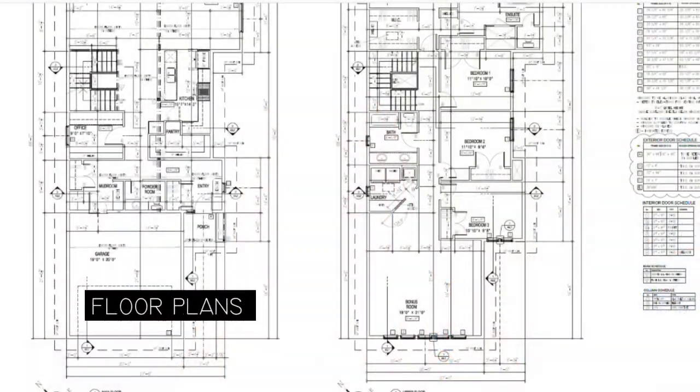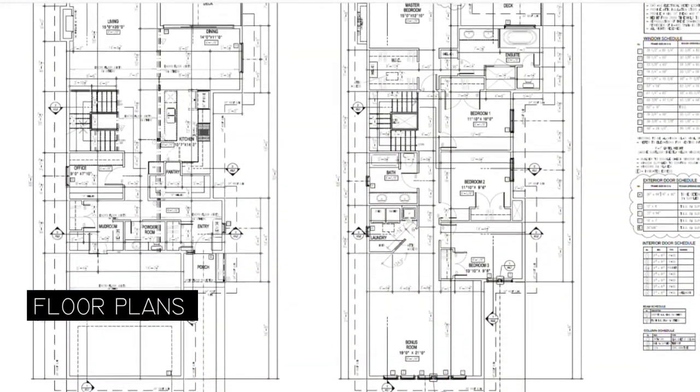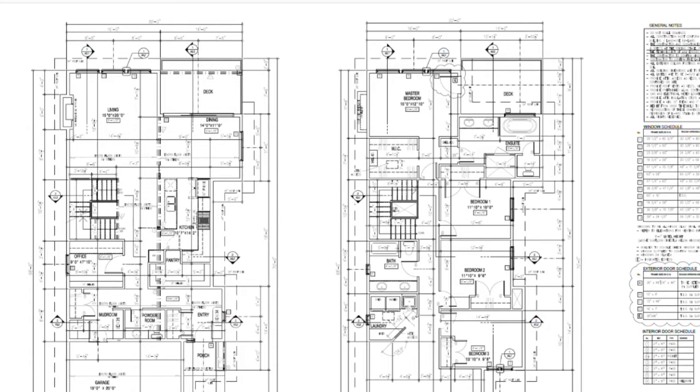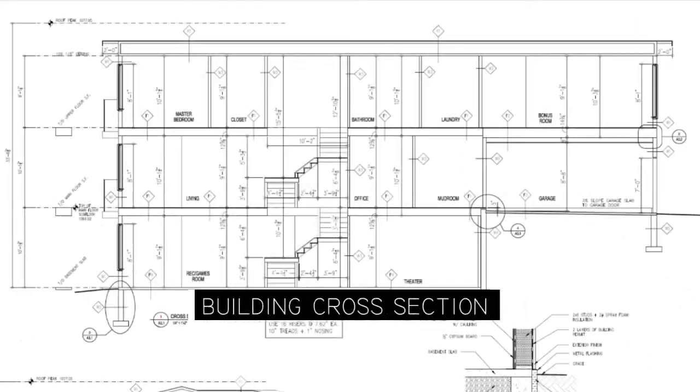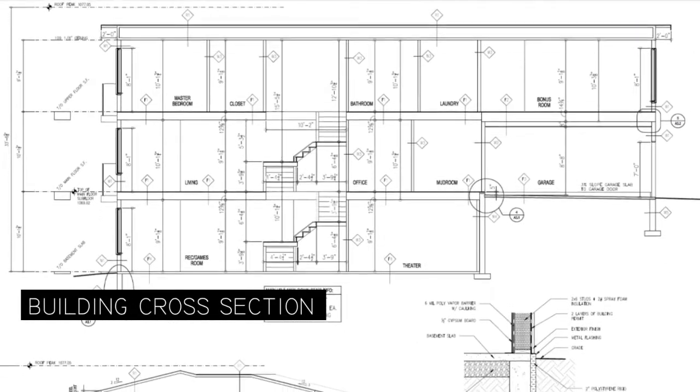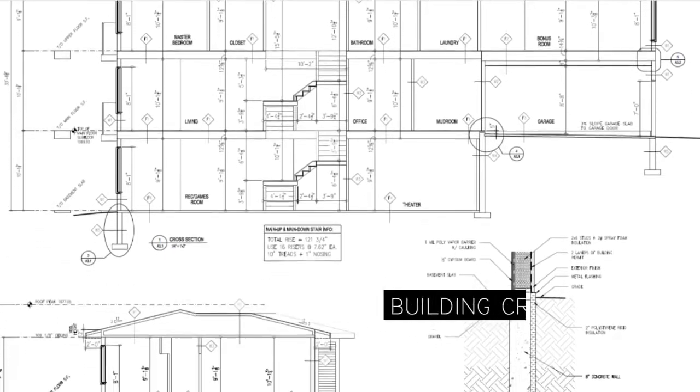Now, what should be included in a set of construction drawings for a new build? The first thing is a detailed floor plan with dimensions, showing room sizes, door and window sizes and locations, and a lot of notes. We should also include detailed building cross-sections, which will show ceiling heights, thickness of floor system, construction assembly, heights of windows and doors, notes and also dimensions.